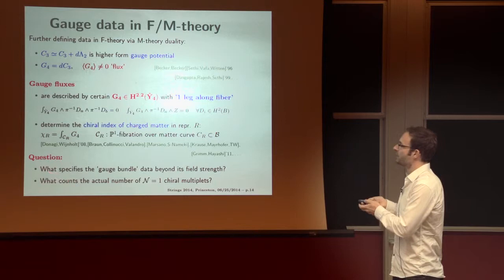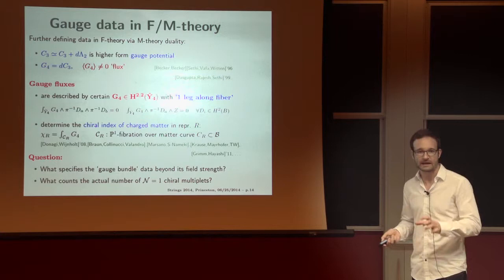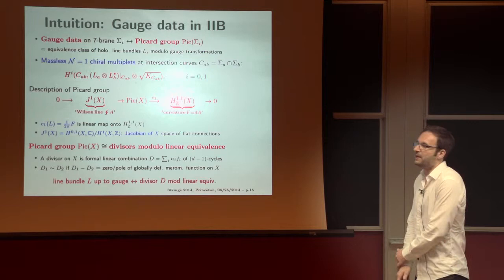However, this only gives us the chiral index. So, if we want to go beyond that, we have to refine our specification of gauge data. So, a natural question is, what is that refinement, and what counts the actual number of N equals one multiplets separately, as opposed to just the chiral index.